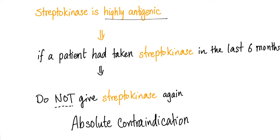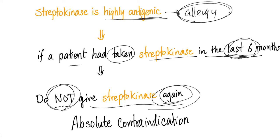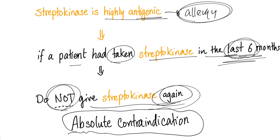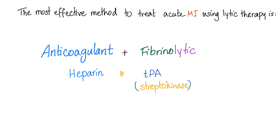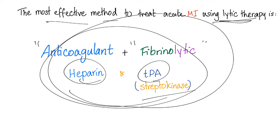Streptokinase is highly antigenic, meaning allergic reactions are common. If a patient has taken streptokinase in the last 6 months, do not give streptokinase again — it's an absolute contraindication. For a patient with acute myocardial infarction requiring lytic therapy, the most effective approach is an anticoagulant such as heparin combined with a fibrinolytic such as TPA or streptokinase. Note that percutaneous coronary intervention is superior to TPA.